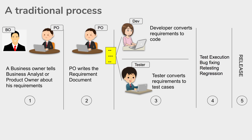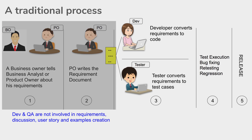Now here there are a few issues. The first one is during the requirement gathering and creating of user stories, the dev and QA teams are not consulted — they are not involved in the requirements discussions and examples discussion. When the dev team creates their code and the testing team creates test cases, they work in silos. There is no shared understanding between dev and QA, and this is one of the main issues with the traditional process that BDD works on.